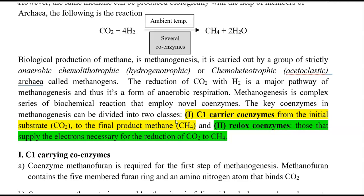Methanogenesis can be carried out by two metabolically different groups of organisms. One is referred to as the hydrogenotrophic group, which employs an anaerobic chemolithotrophic process in which carbon dioxide is combined with hydrogen to form methane. The other group is the chemoheterotrophic group, also referred to as the acetoclastic group. In both groups, archaea are involved and these organisms are collectively referred to as methanogens. In the chemoheterotrophic process, carbon is supplied mainly from acetate, methanol, methylamine, which are converted into methane.